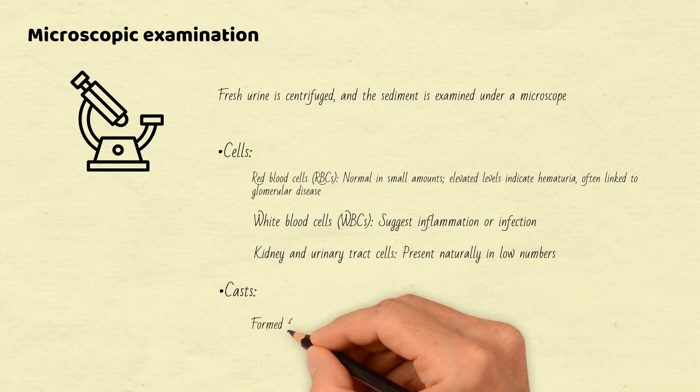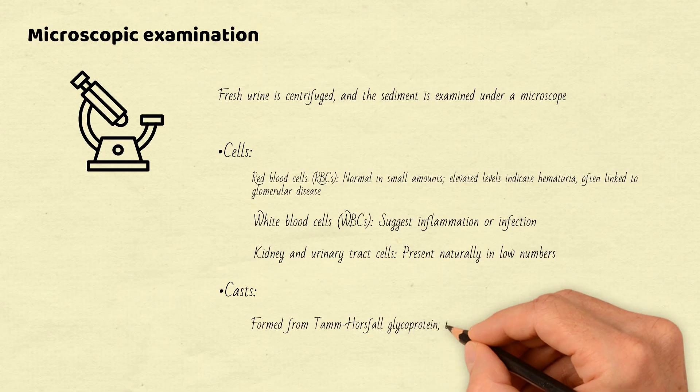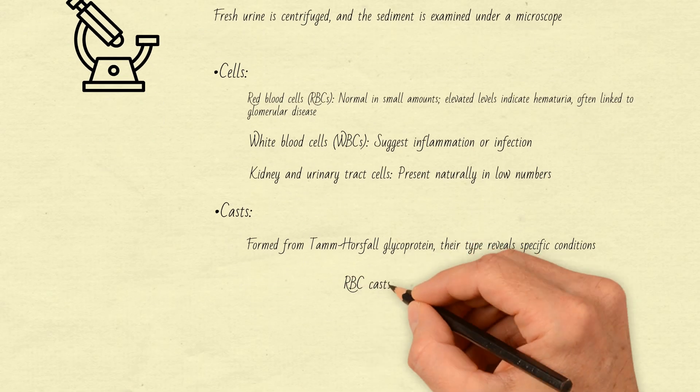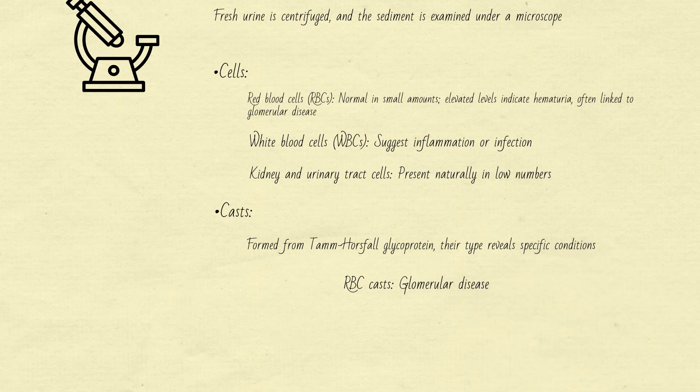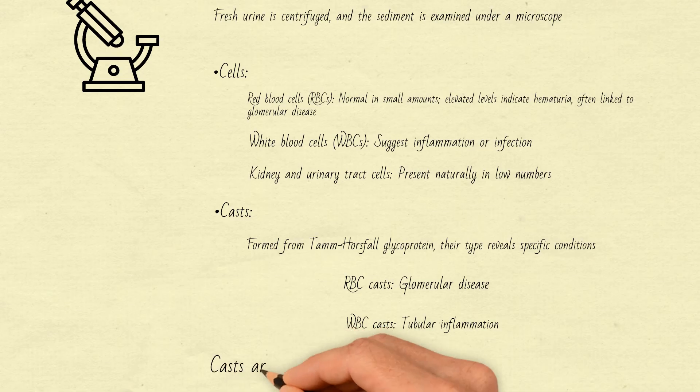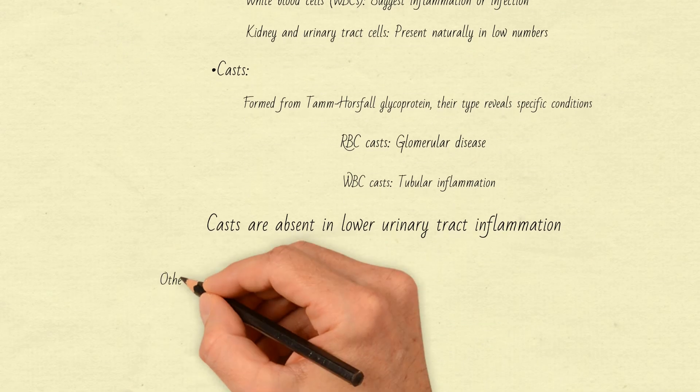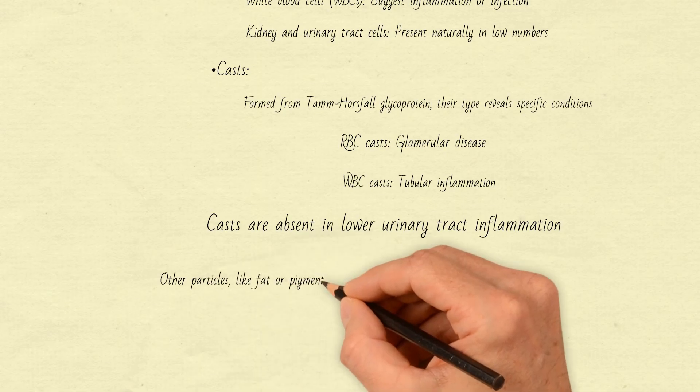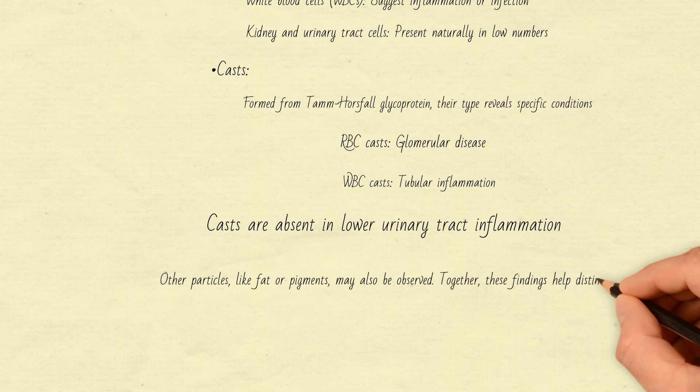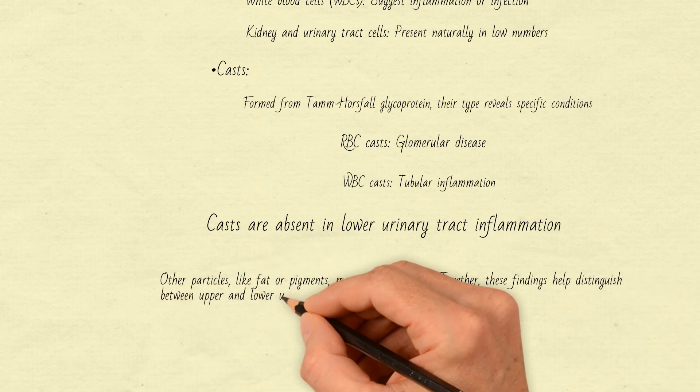Casts, formed from Tamm-Horsfall glycoprotein; their type reveals specific conditions. RBC casts: glomerular disease. WBC casts: tubular inflammation. Casts are absent in lower urinary tract inflammation. Other particles, like fat or pigments, may also be observed. Together, these findings help distinguish between upper and lower urinary tract conditions.